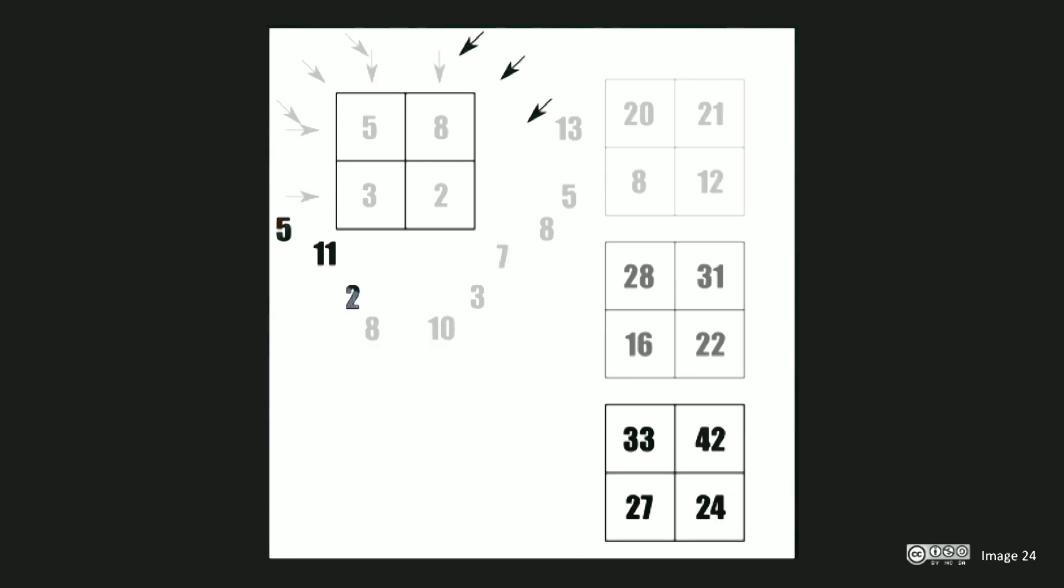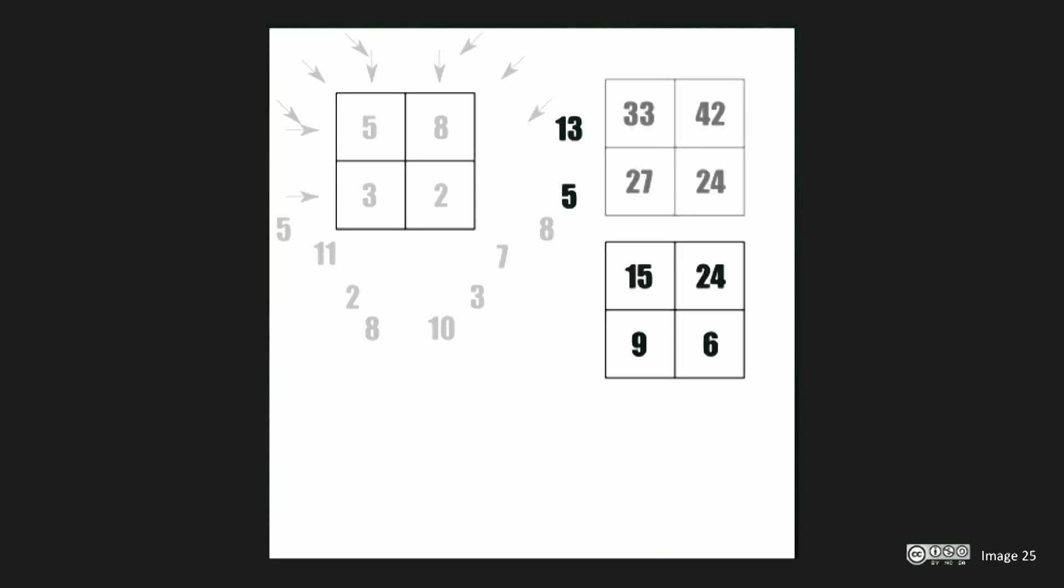We then go back to the first projection and subtract the sum of this projection, in our case 13 and 5, resulting in 18, from each of the elements of our current projection. This gives us a new block of 15, 24, 9 and 6. The final step is then to divide by the number of remaining projections, in our case 3, to give us our final result that matches our original data.